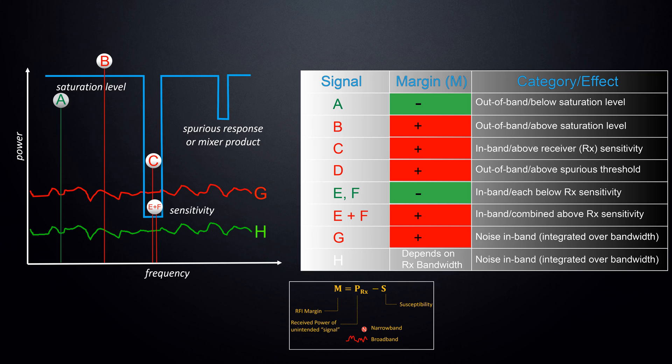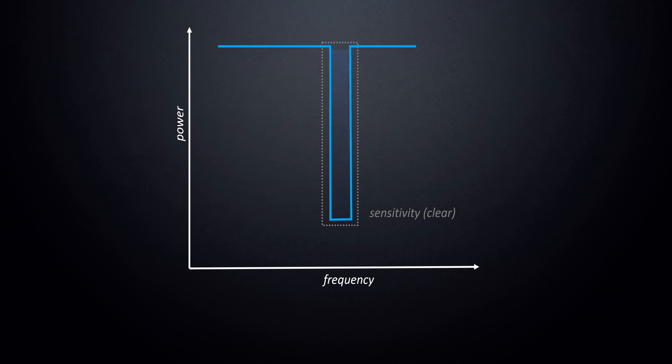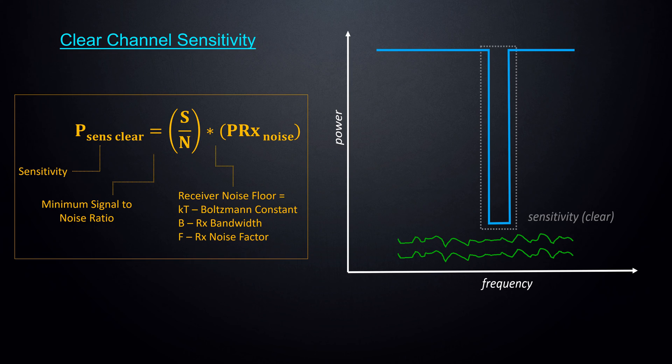Desense is a special case of radio frequency interference that isolates the tuned channel and does not consider out-of-band interference concerns. Think of clear channel sensitivity as a fundamental property of the radio comprising the receiver noise floor and the required signal-to-noise ratio.